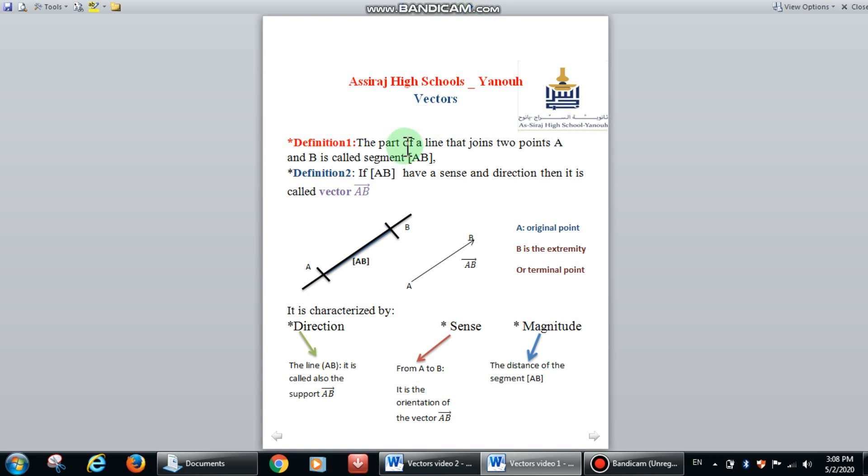Let's start by the definition of segment AB. Segment AB is a part of a line that joins two points A and B.